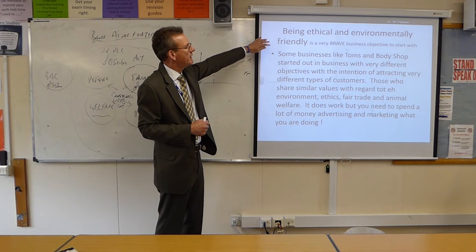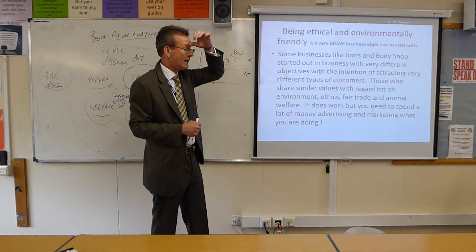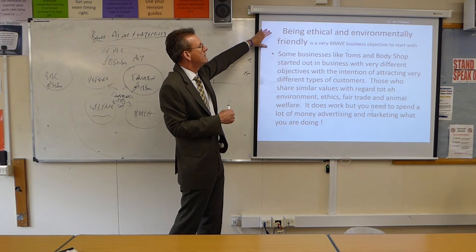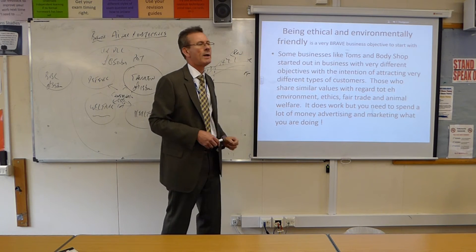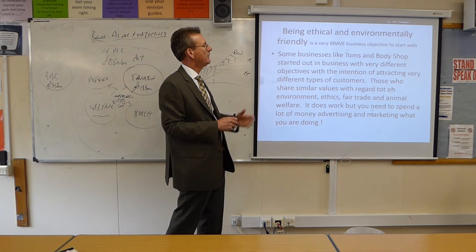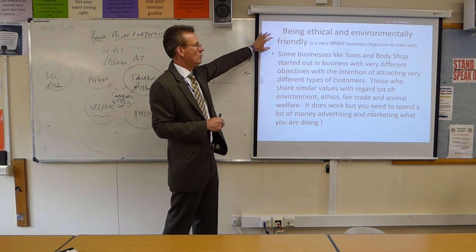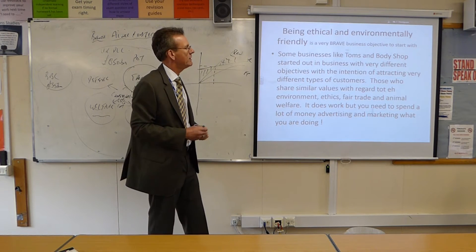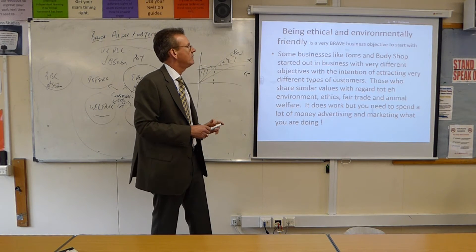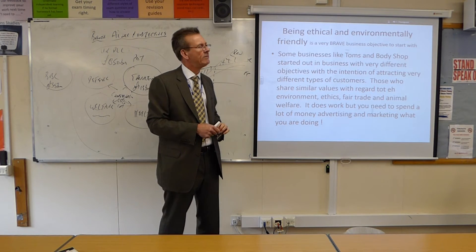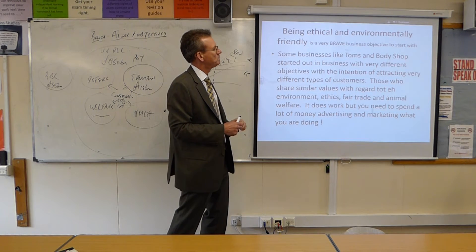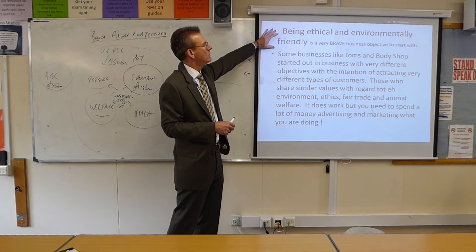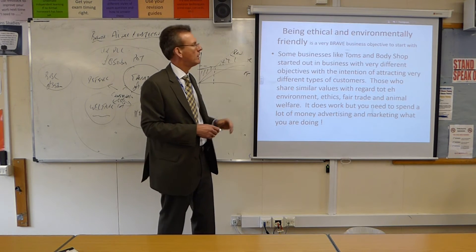Being ethical and environmentally friendly is normally an objective that a business will take on after four or five years. The business might decide to advertise its ethical and environmentally friendly approach. Being ethical and environmentally friendly is normally a two-edged sword — people that like those qualities will be loyal and supportive, but it can also be a cost-saving initiative. It's a very brave business that starts off with those as its objectives, but there are some that do.